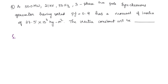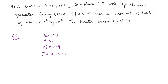First, we will write down whatever information is given. The rating is given as 500 megawatts and the voltage is 20 kilovolts. The power factor is 0.9 and the moment of inertia J is equal to 27.5 × 10³. We have to find the inertia constant H.